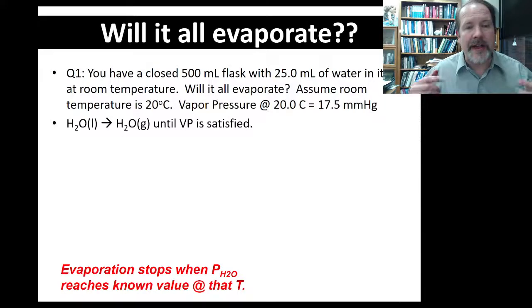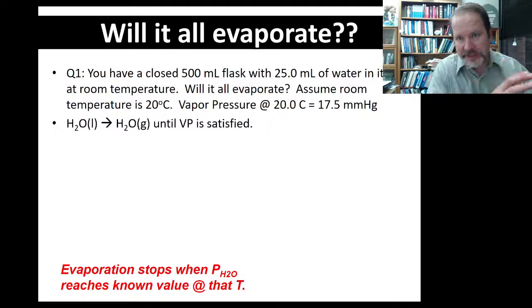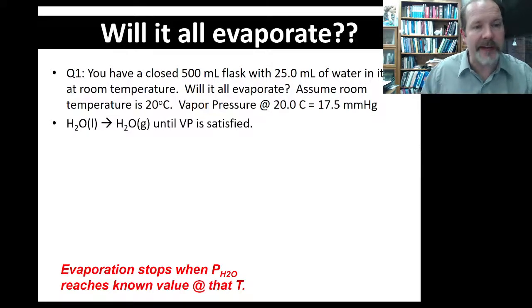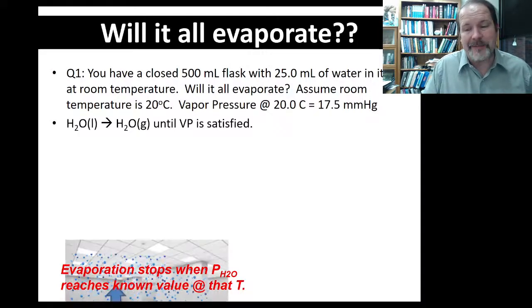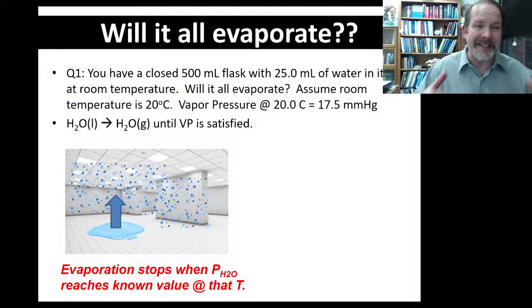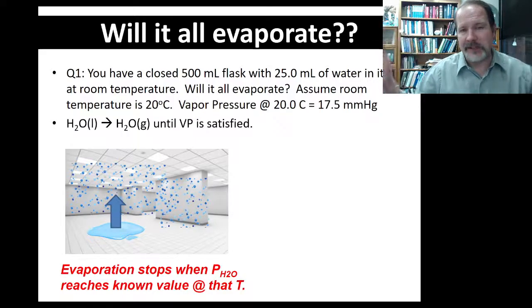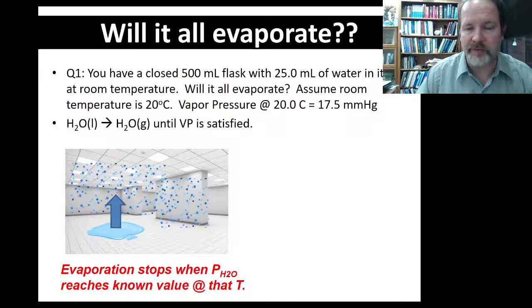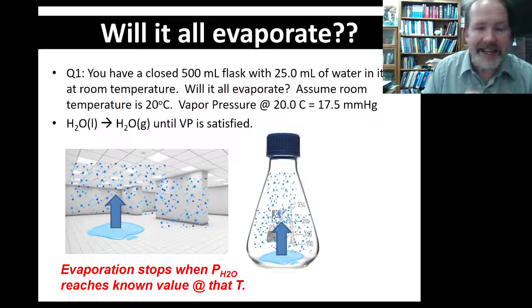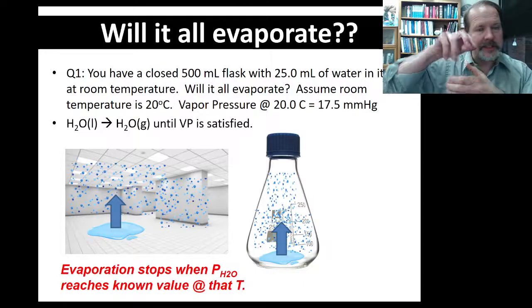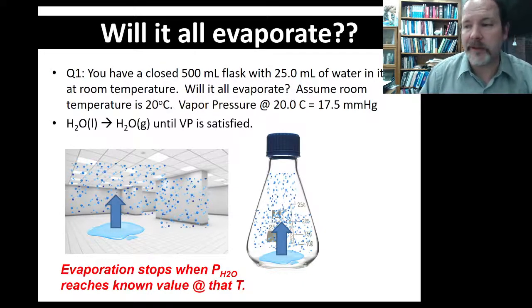So we're going to think about how this all works. The key concept is water will evaporate — turning from liquid into gas — until the vapor pressure of 17.5 millimeters of mercury is satisfied. We don't run into this a lot because in an open room it's hard to hit vapor pressure. You can have a lot of water and it'll just keep evaporating and leaks out of the room, so we don't reach vapor pressure. But in a closed container, we do — it's going to be pretty easy to hit the vapor pressure.